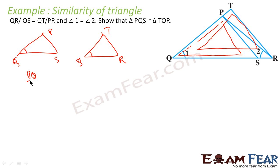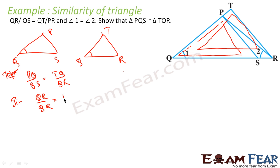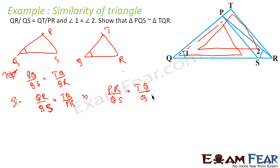So we have to prove that PQ/QS is equal to TQ/QR. What is given is QR/QS is equal to QT/PR. I can rewrite TQ/QR, and taking QR across I get PR/QS is equal to TQ/QR.